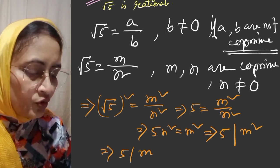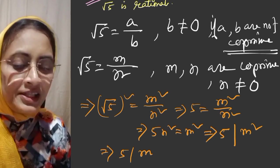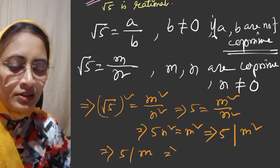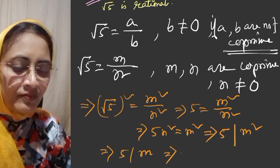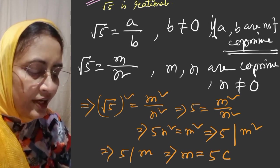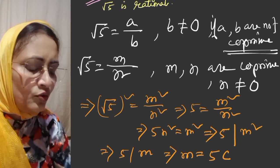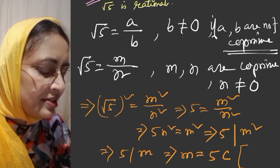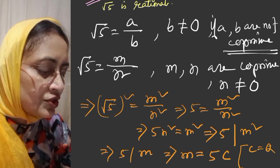Using the theorem, 5 divides m square implies 5 divides m. So what will it be? m is equal to 5 into something. Suppose we say 5 into c, where c is the quotient and 5 is the divisor.